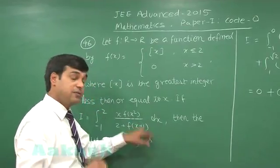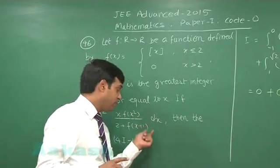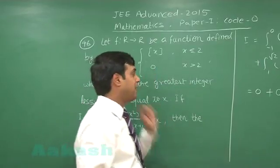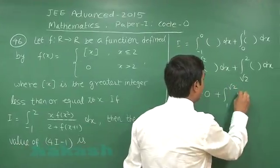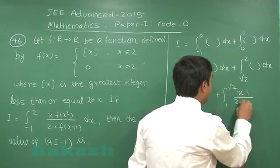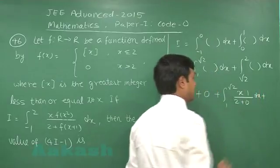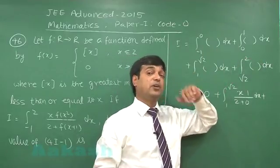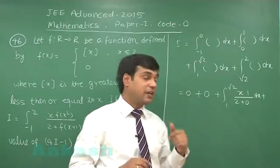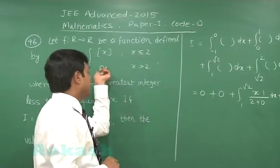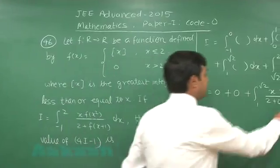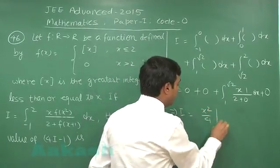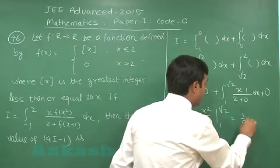So the third term simplifies to the integral from 1 to √2 of x · (1/2) dx. For the fourth term, when x is between √2 and 2, x² is between 2 and 4, and the greatest integer function gives a result that falls under the 0 branch, so that term is simply 0. Therefore I equals x²/4 evaluated from 1 to √2, which gives 1/4.